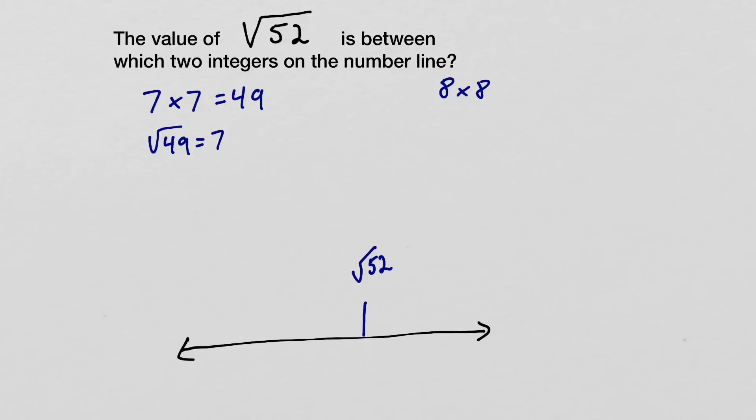If you're not sure, why don't we try 8? 8 times 8 is 64, so the square root of 64 would then be 8. Well, we know that 64 is greater than 52, so these numbers are going to fall on our number line.